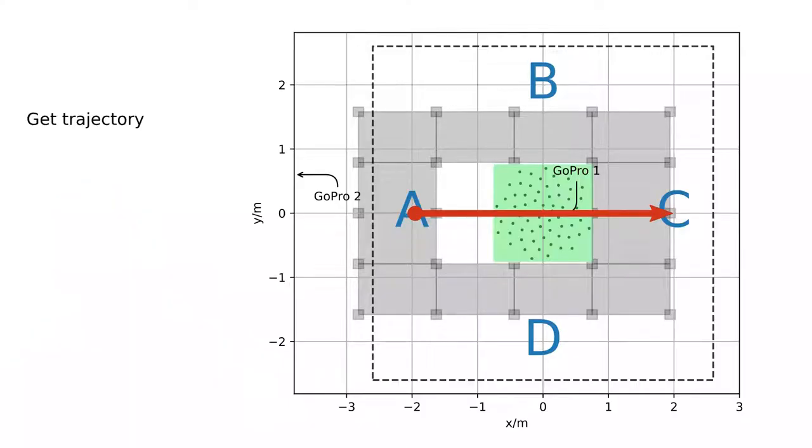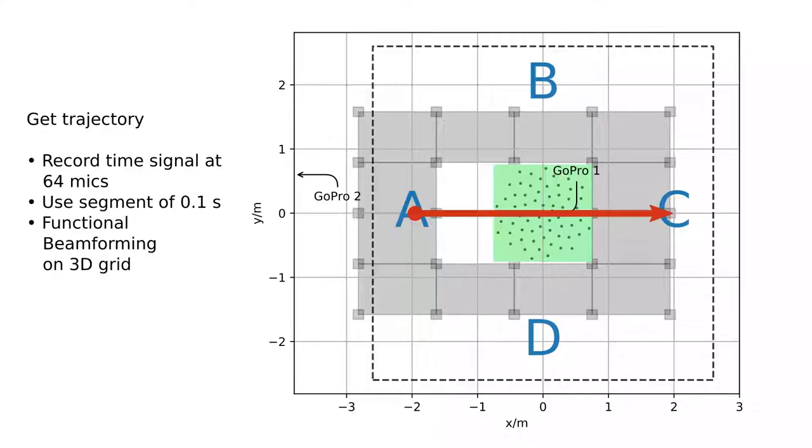First, we want to get to the trajectory of our drone. How do we do that? Well, in short, we record the time signals simultaneously at all 64 microphones and then we use time segments of one tenth of a second where we assume that the drone doesn't move too much and we do functional beamforming on a 3D grid, find local maxima, assume that there is a drone where we find a maximum and then afterwards filter for plausibility and connect the dots to get a path.